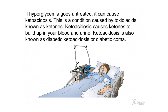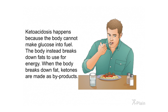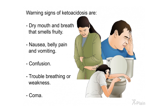If hyperglycemia goes untreated, it can cause ketoacidosis — a condition caused by toxic acids known as ketones. Ketones build up in the blood and urine. Ketoacidosis, also known as diabetic ketoacidosis or diabetic coma, happens because the body cannot convert glucose into fuel, so it breaks down fats instead, producing ketones as byproducts. Warning signs include dry mouth, fruity-smelling breath, nausea, belly pain, vomiting, confusion, trouble breathing, weakness, and coma.